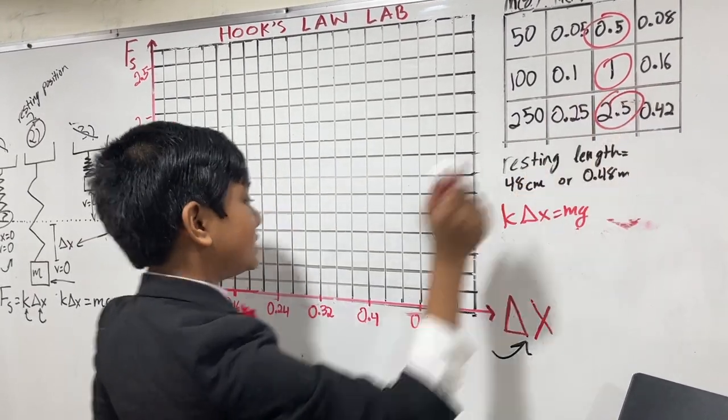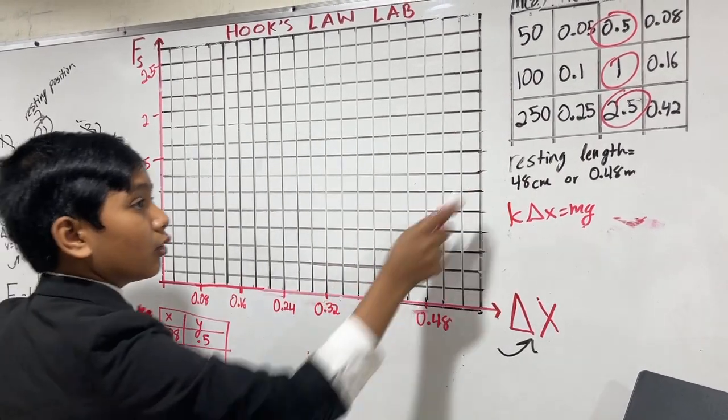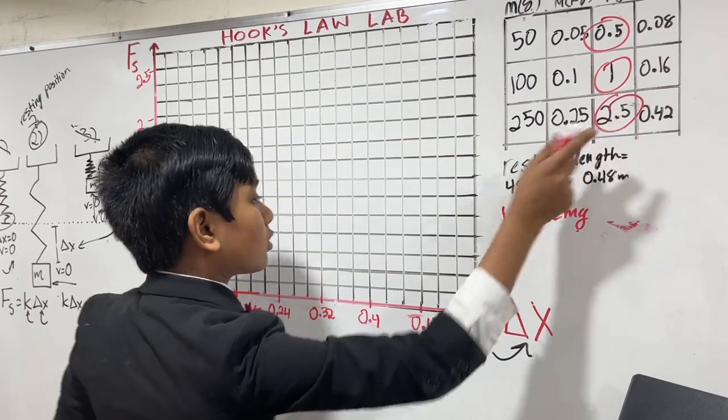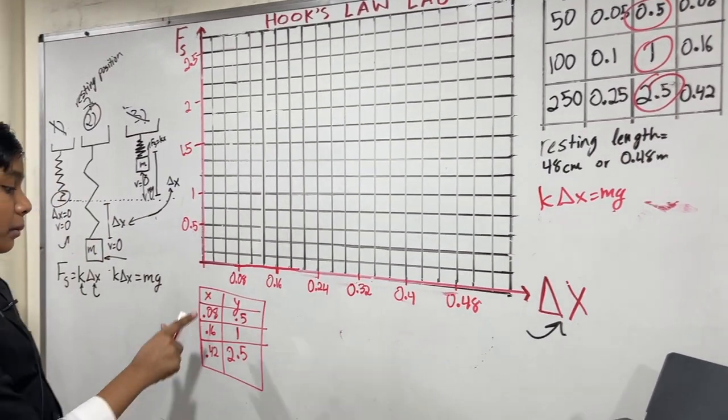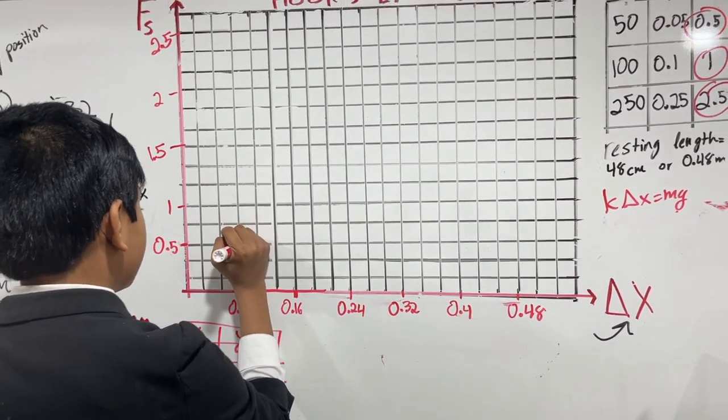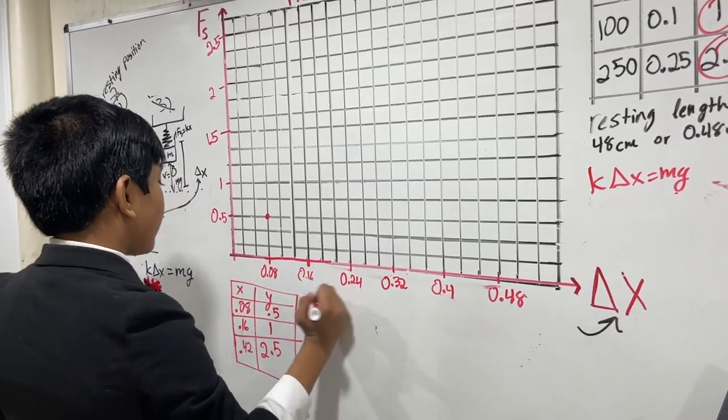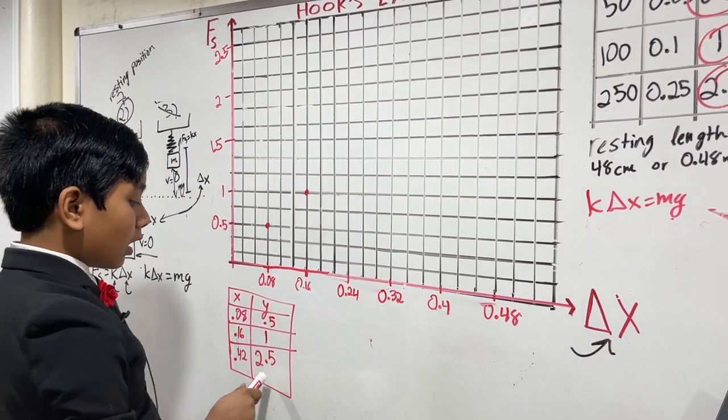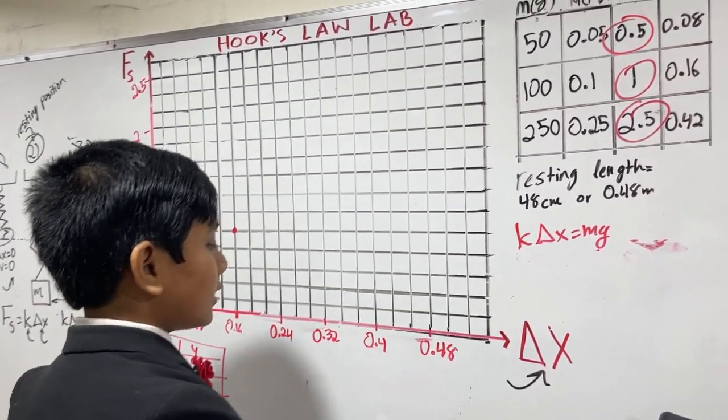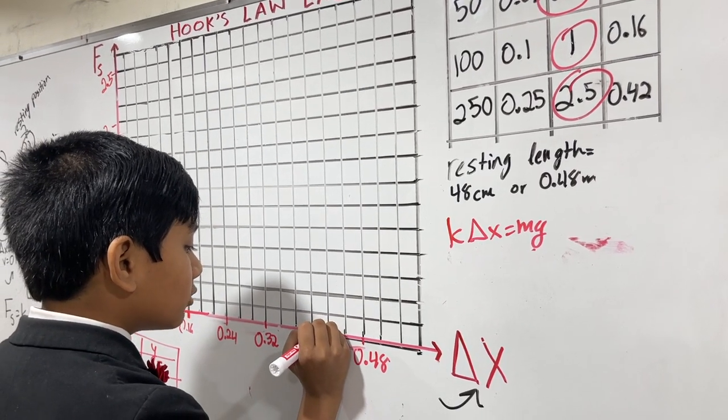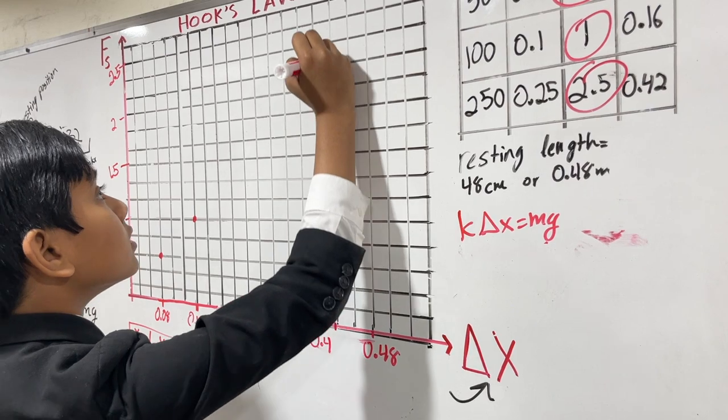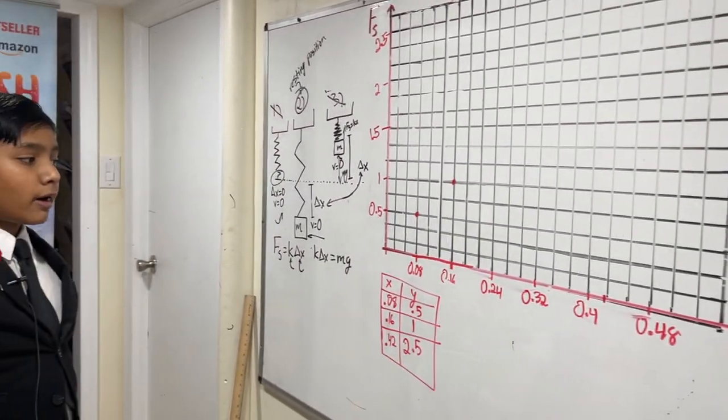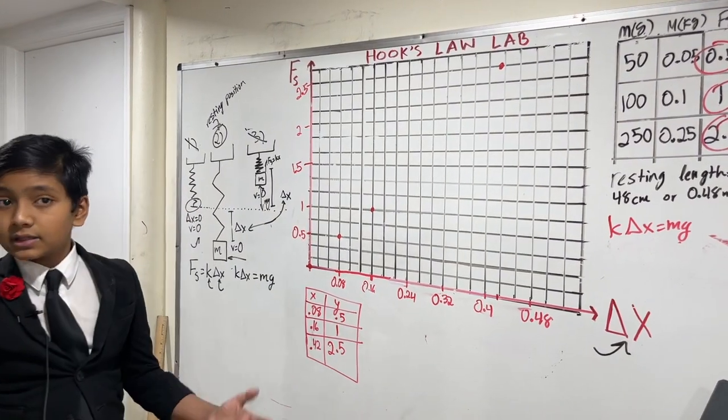Okay, so now, let's do this. So, our first point is, and let's actually make an x, y data table so that we don't mess anything up. So, our first x is going to be 0.08, and our first y is going to be 0.5. Our second x is going to be 0.16, and our second y is going to be 1. And our third one is going to be 0.42, and our third one for y is going to be 2.5.